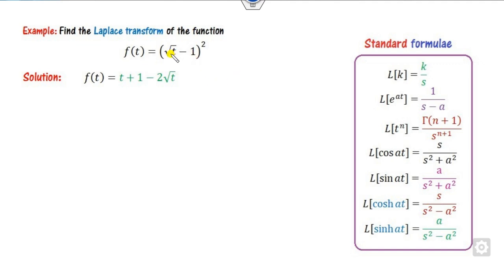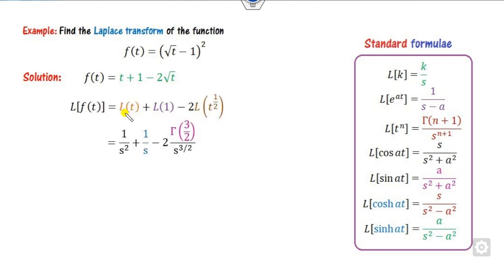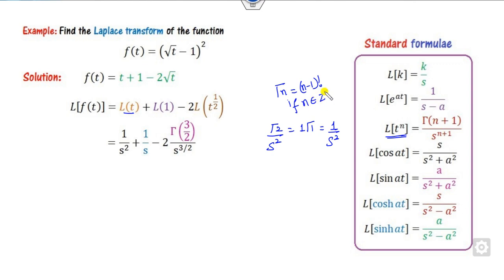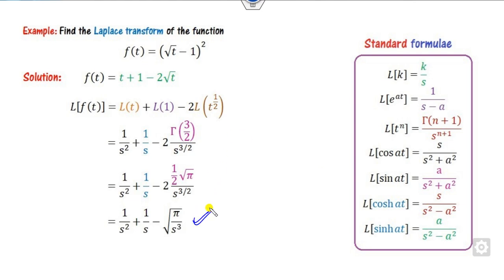For the last example, the polynomial is not in standard power form, so expand it. Using the linear property, apply the Laplace to each term. The gamma function of 2 is 1 factorial = 1, giving 1/s². The gamma function of 1 is 1, giving 1/s. For gamma(3/2), write (1/2)·gamma(1/2) = √π/2. Substitute these values to get the required answer. Again verify that as s approaches infinity the answer goes to 0. This is the standard way to use these formulas — always remember these 6 or 7 standard results.